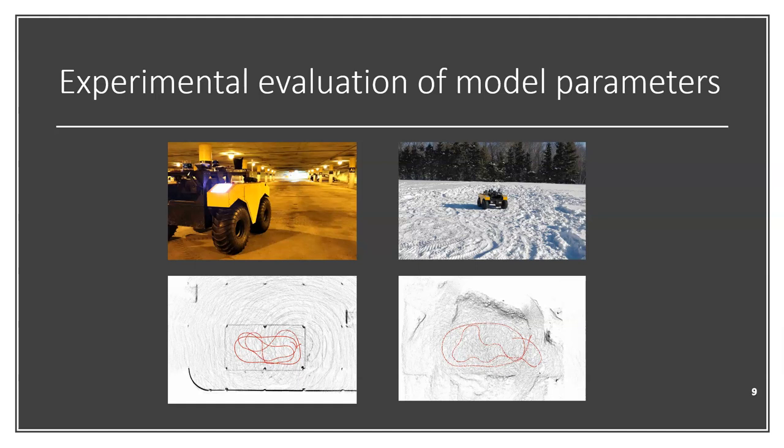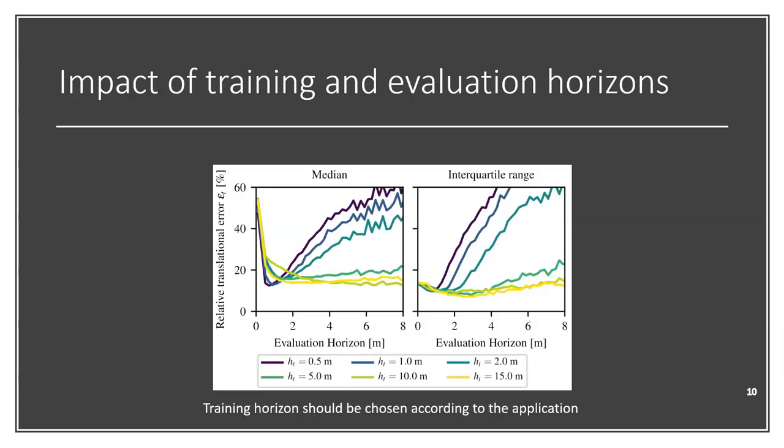Now, for both environments, what we did is we drove two separate trajectories, one being for the model training and another one being for model validation. Each trajectory was split into an N number of segments, and the length of each segment corresponds to an horizon length being called H.